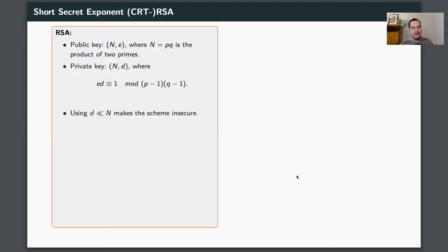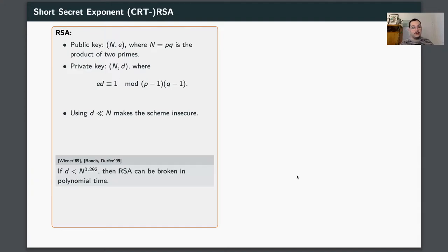What's very interesting about RSA is the fact that if you instantiate it with D significantly smaller than N, then the scheme becomes completely insecure. This was first shown by Wiener in '89, and then improved by Boneh and Durfee in '99. They showed if D is smaller than N to the power of 0.292, then you can break RSA in polynomial time.